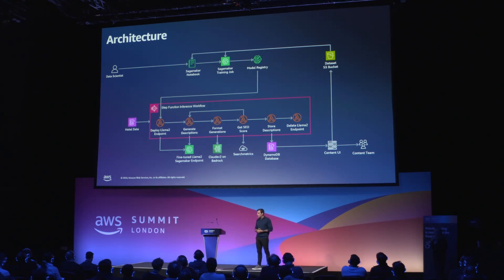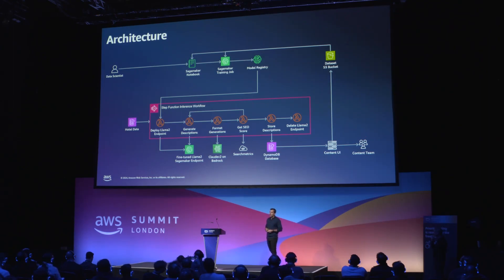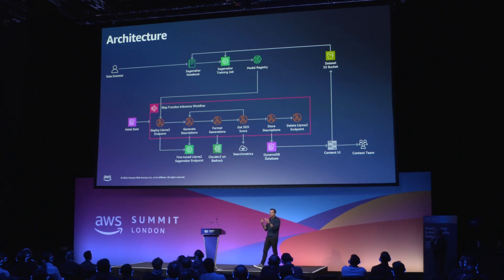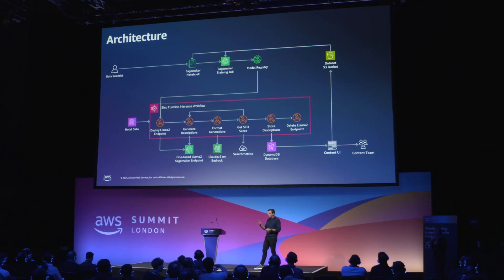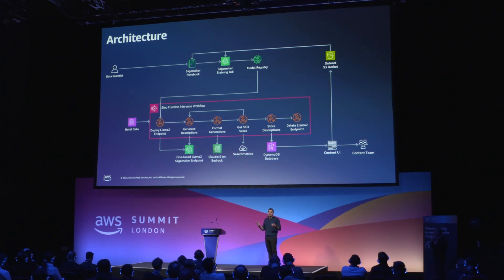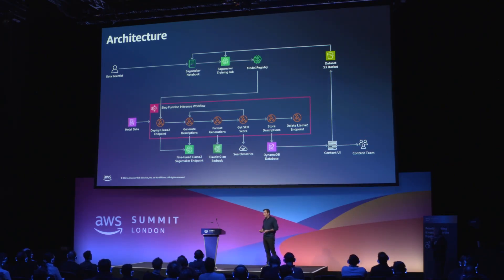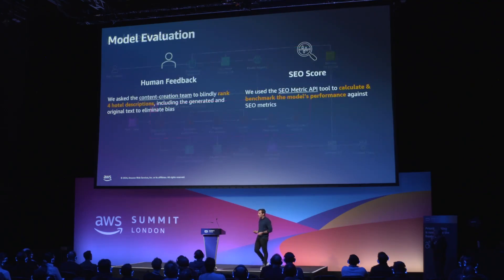By the time we receive data from the third-party provider, we initiate a step function workflow that in batch format will generate our well-written hotel descriptions. We then calculate the SEO score using a third-party API called SearchMetrics, and store the hotel description in our DynamoDB table alongside the SEO score. This DynamoDB table empowers a content UI that the content team was able to use to give us feedback. Before we go, we clean our endpoints and anything we don't need.